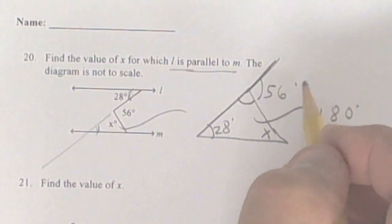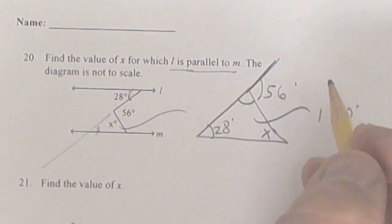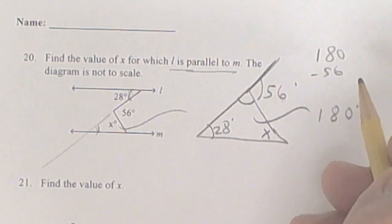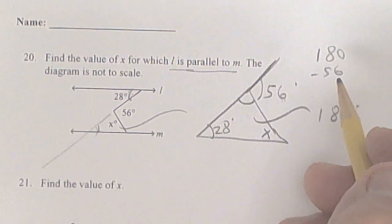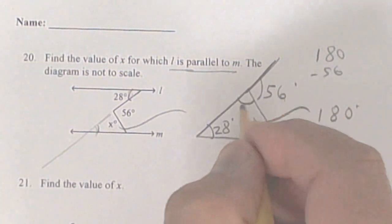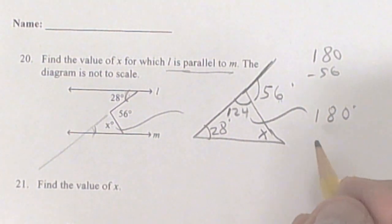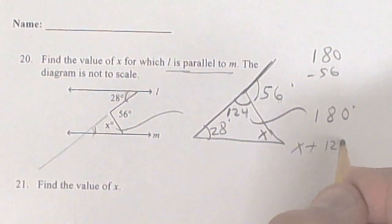So you're going to take 180 minus 56, and that's going to give you 124. Let me just verify it. So put 124 here, and then every triangle adds up to 180, so put x plus 124 plus 28.